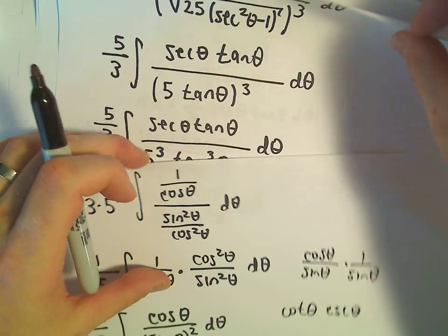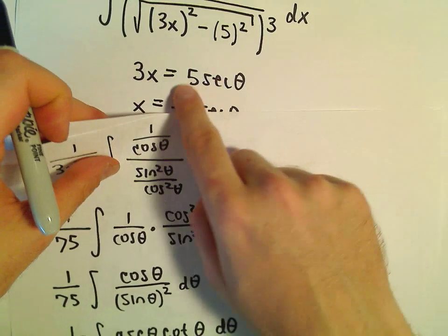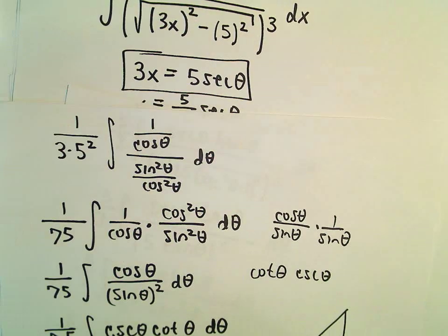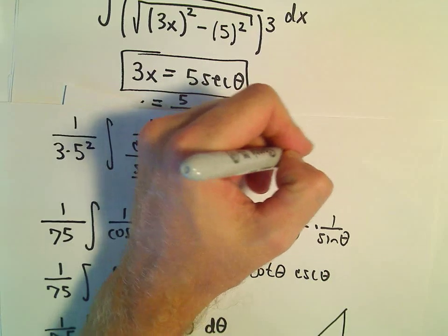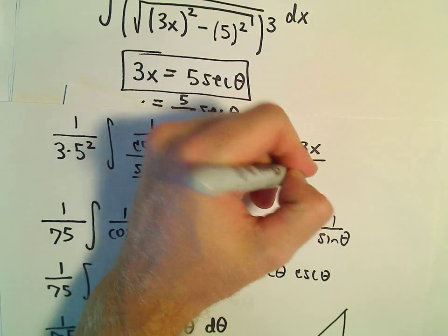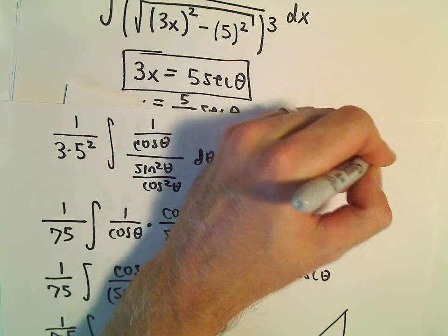Where'd you go? Back a little ways. So our original substitution was 3x equals 5 secant theta.